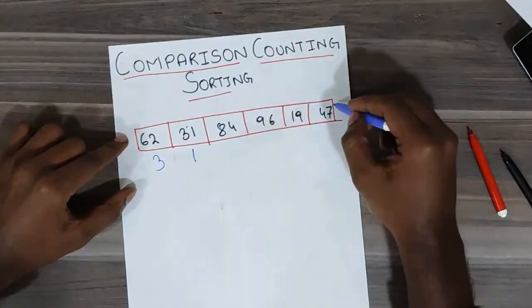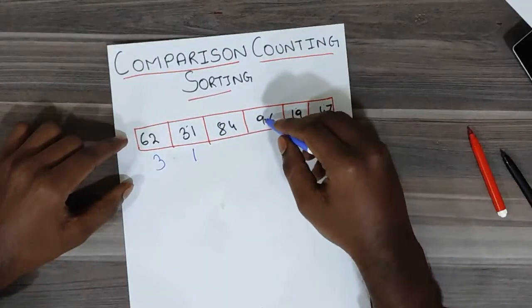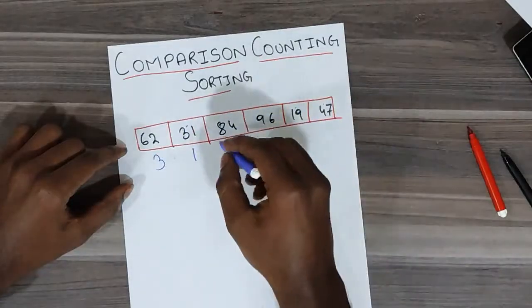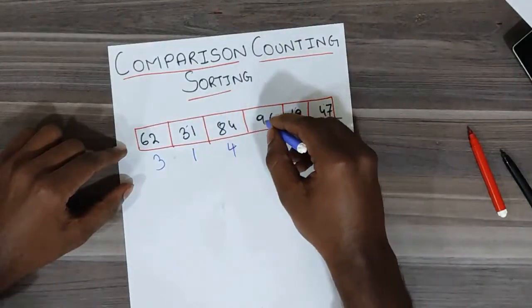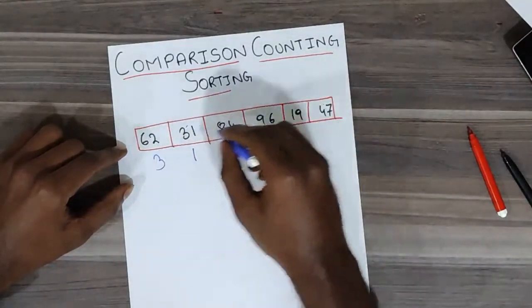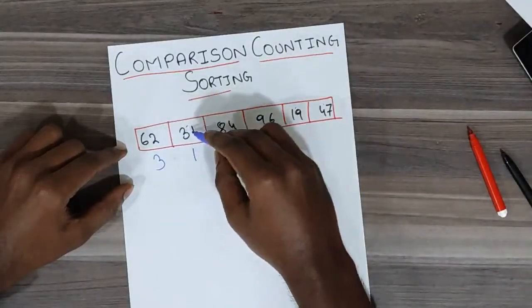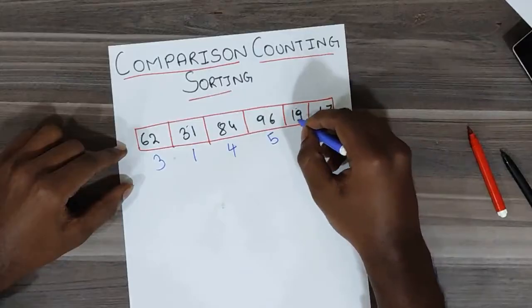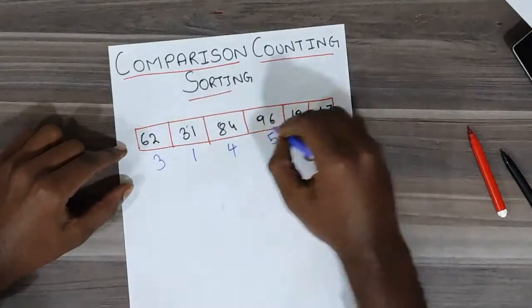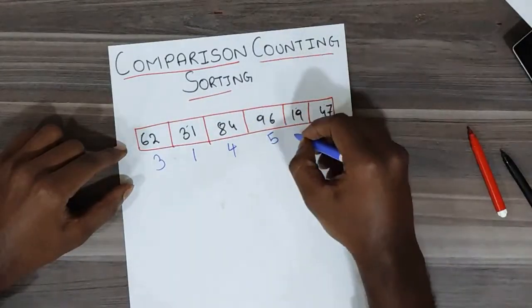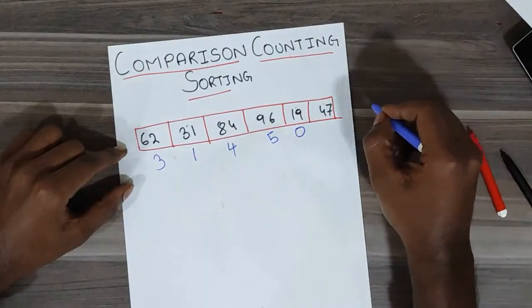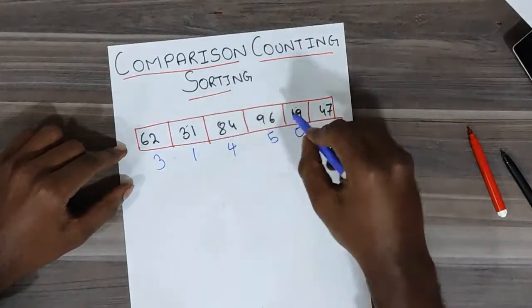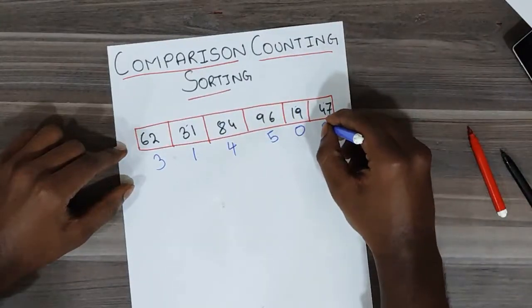For 84, the only element greater than 84 is 96, so 1, 2, 3, 4 elements are smaller than 84, giving it a count of 4. Since 96 is the largest element, all other elements are smaller, so it gets a count of 5. Since 19 is the smallest element, all other elements are greater, so there won't be any number associated with it — its count is 0.